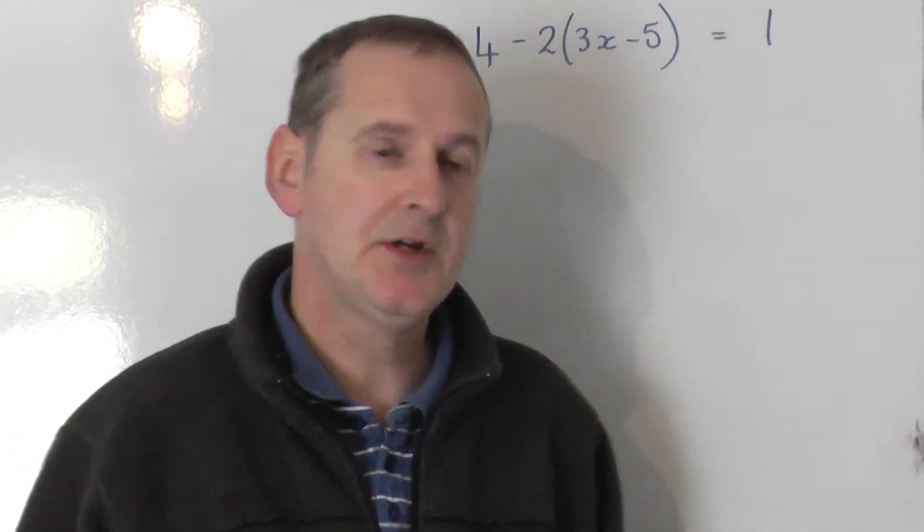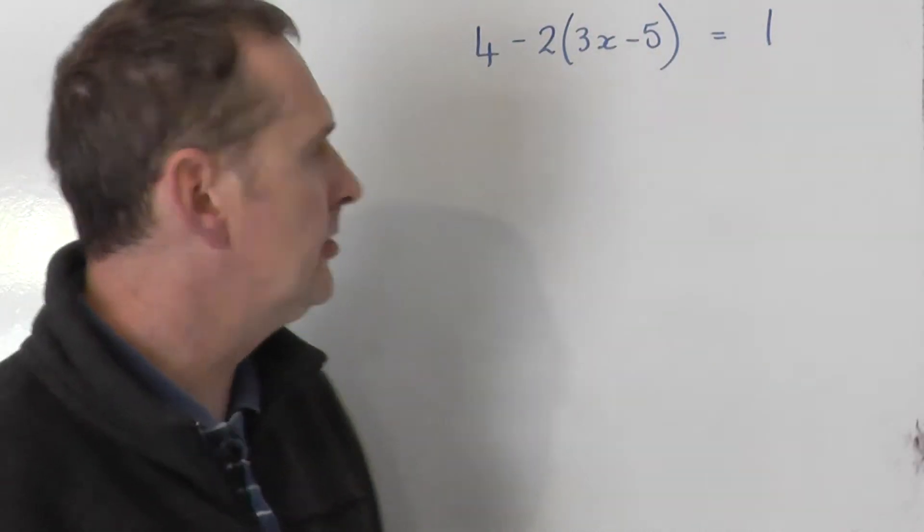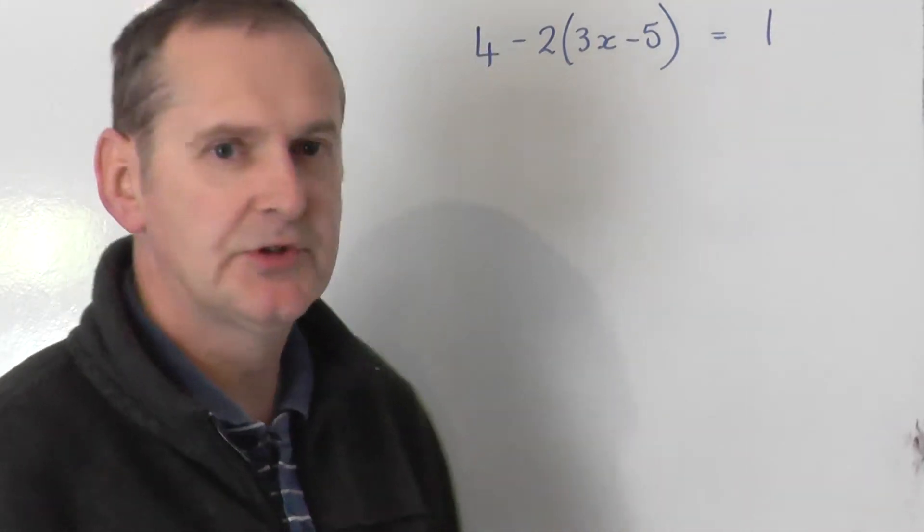Let's take a look at solving this equation: 4 take away 2 lots of 3x minus 5 is equal to 1.